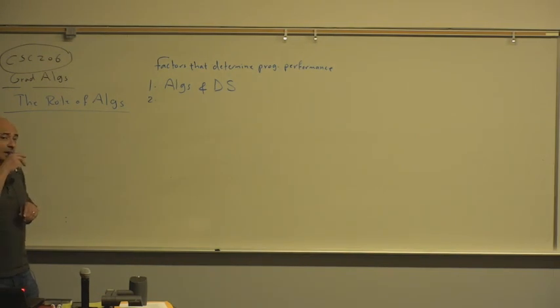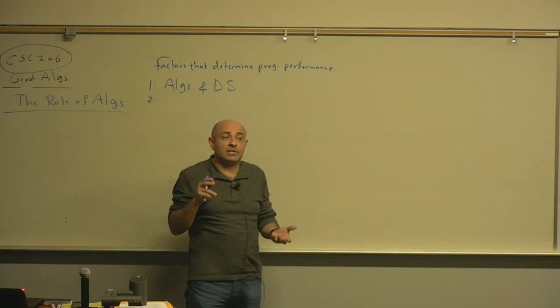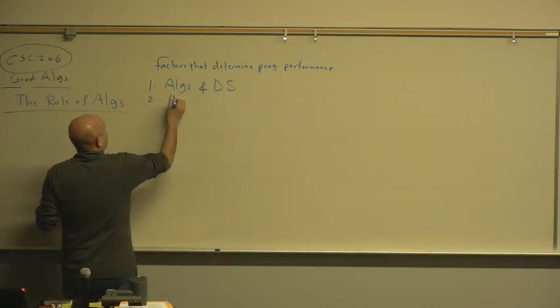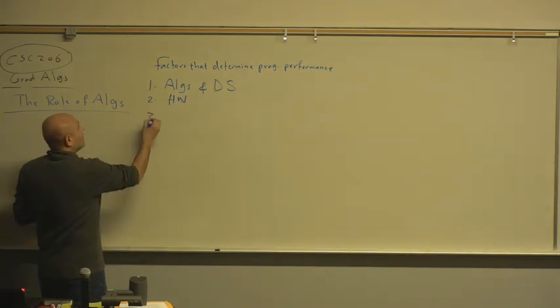Time and space. Well, these are the metrics that we measure. Hardware. Okay, the hardware. This is the obvious one, the speed of the processor. The third factor.